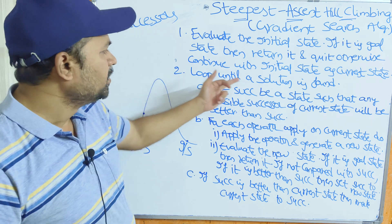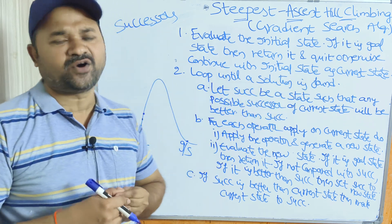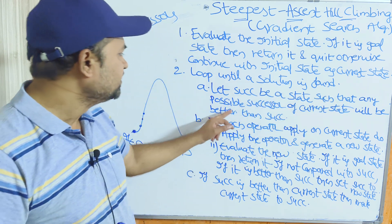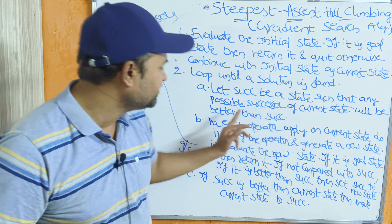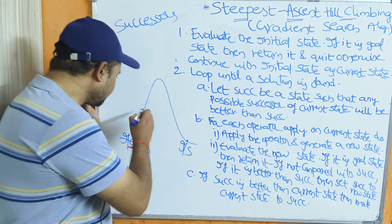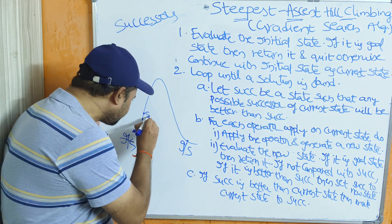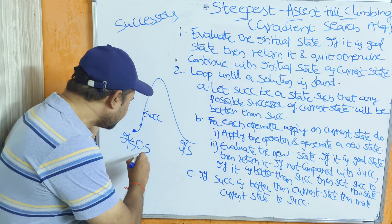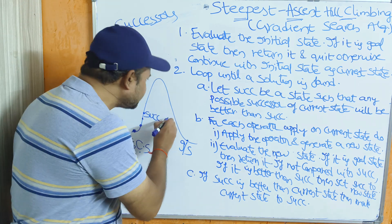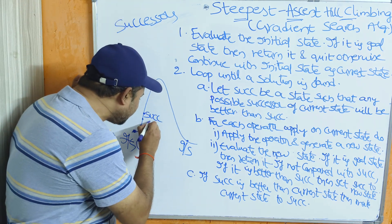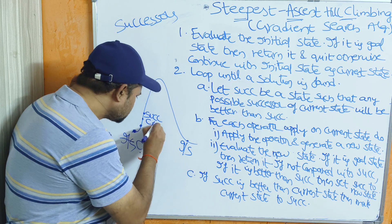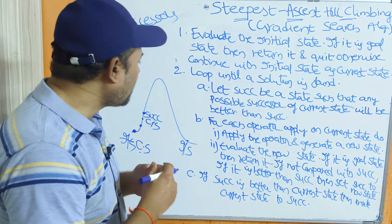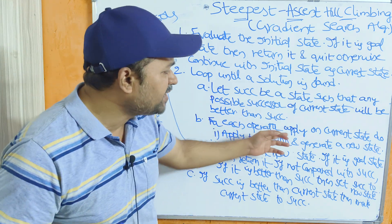Out of all the available successors, we choose the best one. Step two — loop until a solution is found: let 'successor' be a state such that any possible successor of the current state will be better than it. Here, this state is better than any other possible successor of the current state, so we make it the current successor.